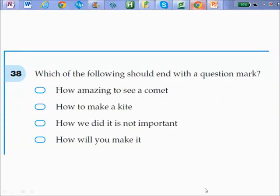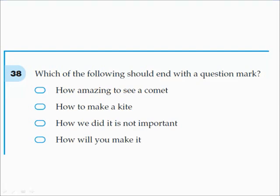When looking at a question like this, it's asking you which one should end with a question mark—but it's actually asking which one of these is a proper question. So when it says 'How amazing to see a comet,' that's not actually a question—it's just saying it's very amazing. 'How to make a kite' is just an instruction. And 'How we did it is not important'—that's also not a question. But 'How will you make it?' If you say it to yourself in your head, you'll hear that—'How will you make it?'—and your voice goes up for a question.